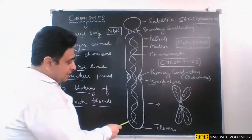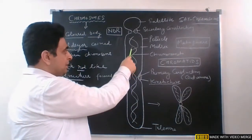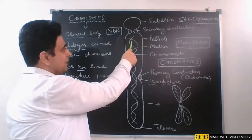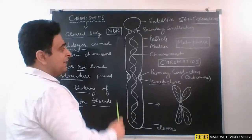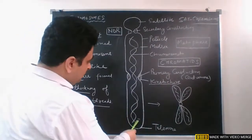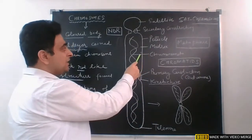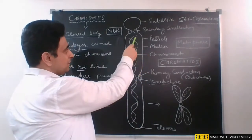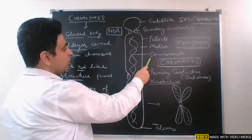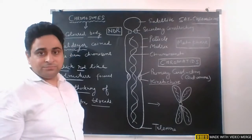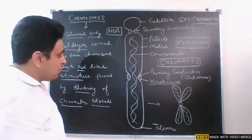Inside the chromatid there is highly coiled chromatin material, that is DNA. The outer membrane of the chromatid is called the pellicle, the material or space inside is called the matrix, and these coiled structures inside are called chromonemata.